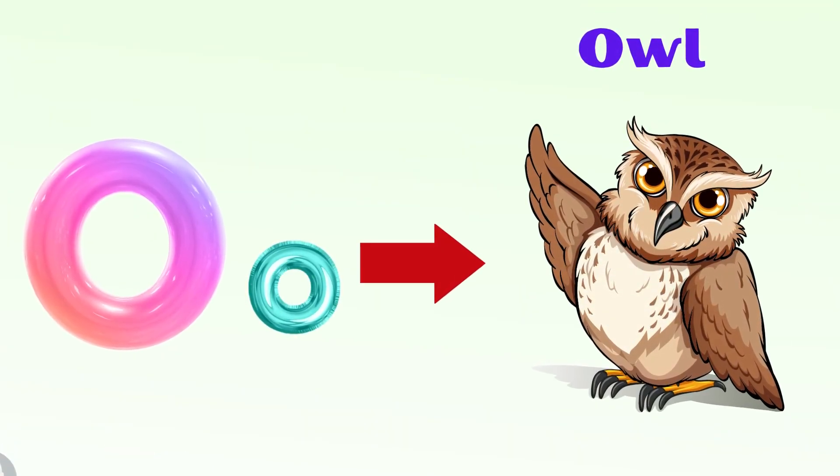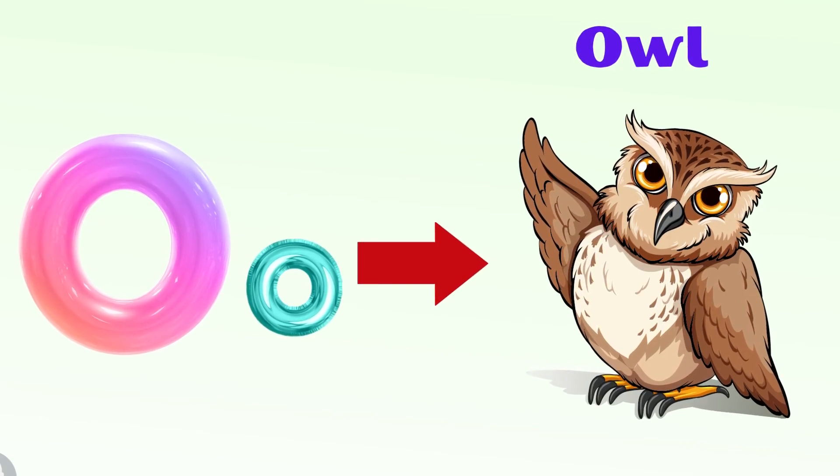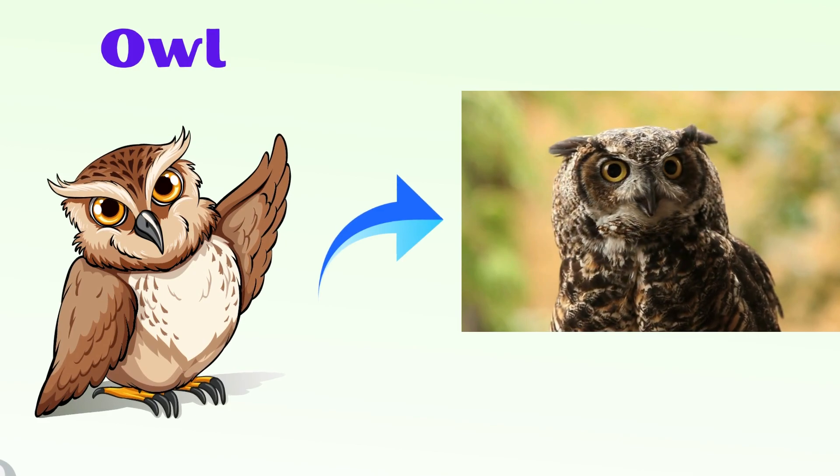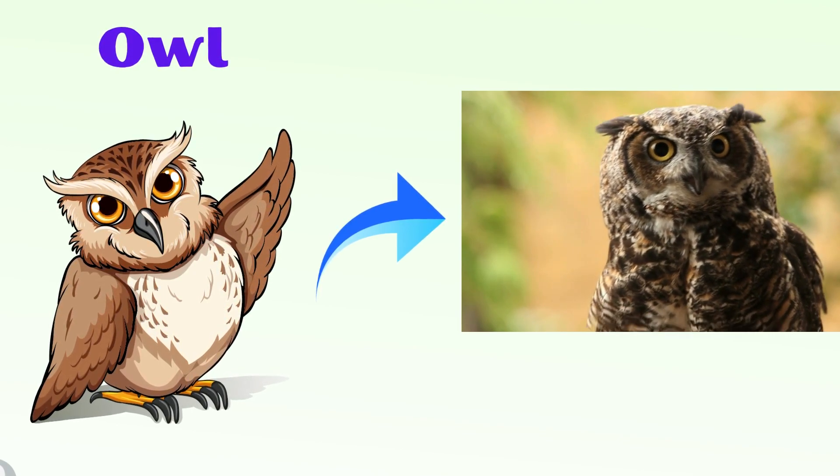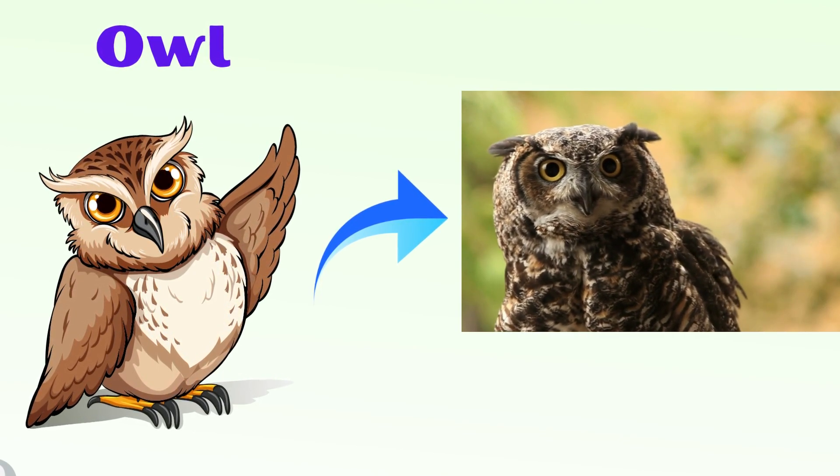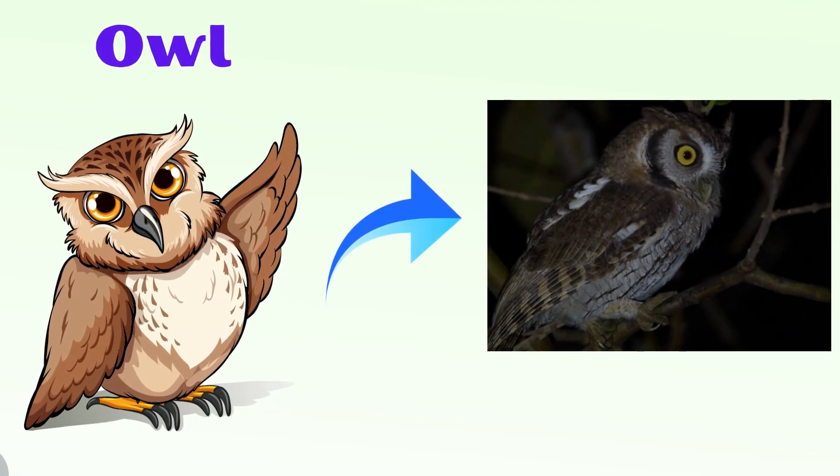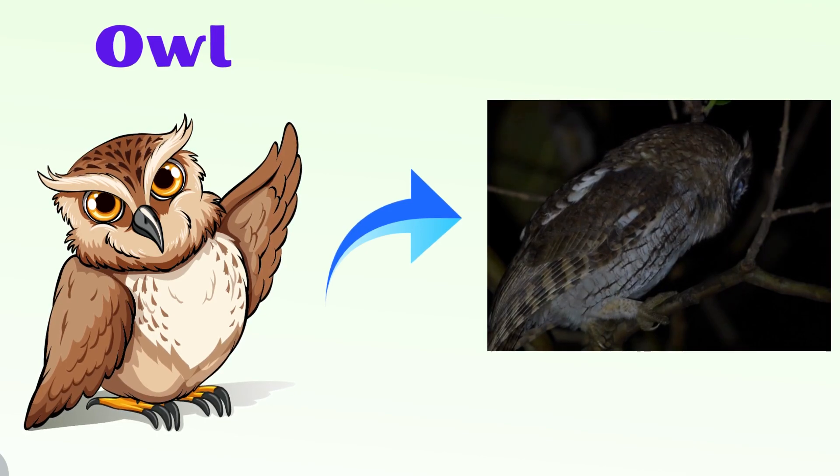O for owl. Owls have round, forward-looking eyes and sharply hooked beaks. Most owls are nocturnal birds, which means they sleep during the day.